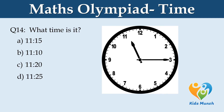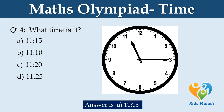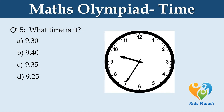What time is it? Option A: 11:15. Option B: 1:10. Option C: 11:20. Option D: 11:25. What time is it? Option A: 9:30. Option B: 9:40. Option C: 9:35. Option D: 9:25.